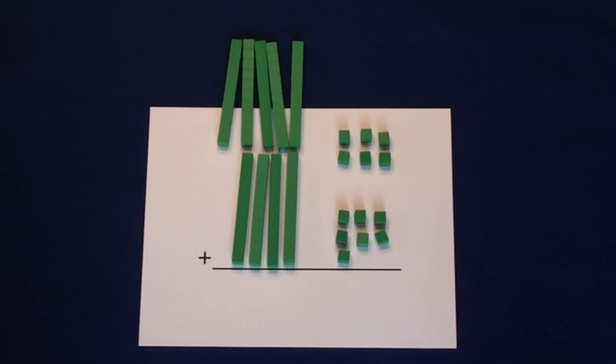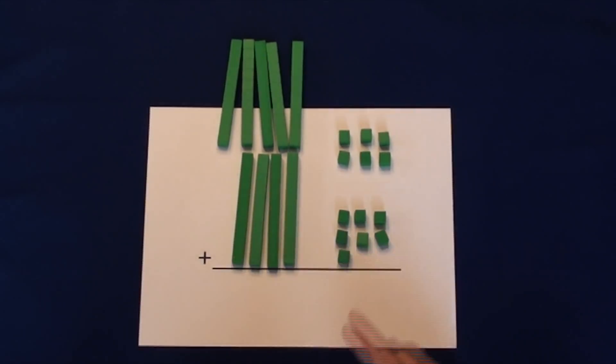The bottom row has 4 tens and 7 ones, or 47. When we add multiple digits, we start by adding the 1's column first. 6 ones plus 7 ones equals 13 ones.